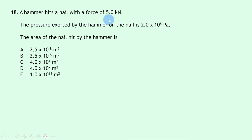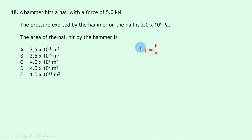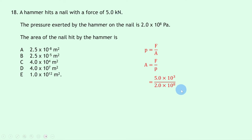Question 18: a hammer hits a nail with a force of 5.0 kilonewtons and a pressure of 2.0 × 10⁸ pascals. Using P = F/A, rearrange to A = F/P = (5.0 × 10³) / (2.0 × 10⁸) = 2.5 × 10⁻⁵ metres squared, which is answer B.